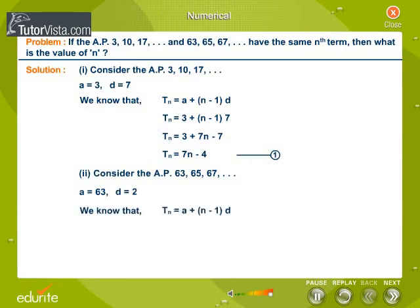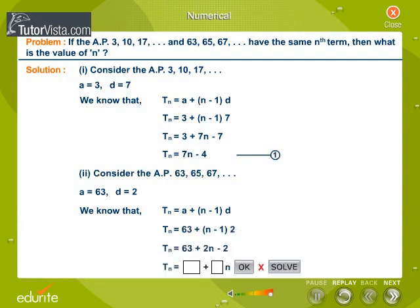Obtain the equation of T_n by substituting the values of a and d. Therefore T_n equals 61 plus 2n. Let this be equation 2.